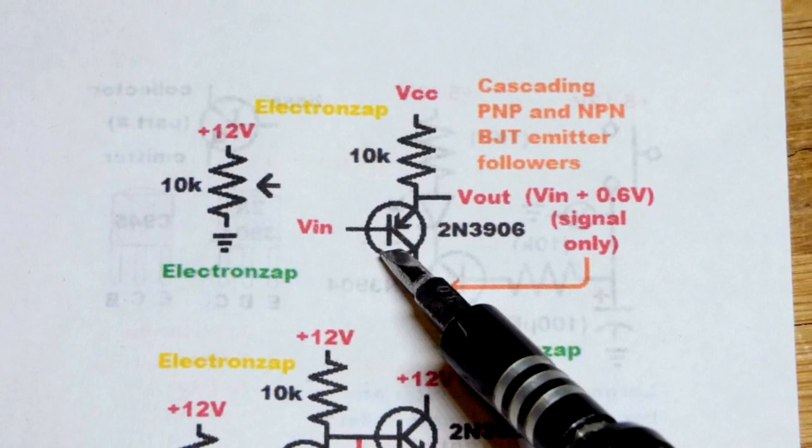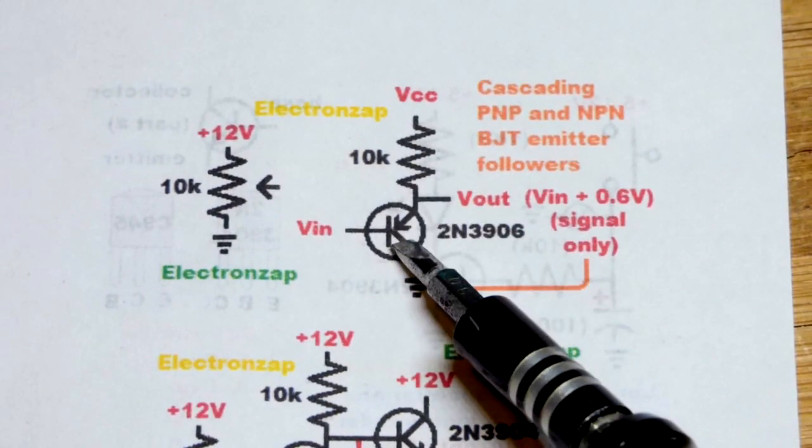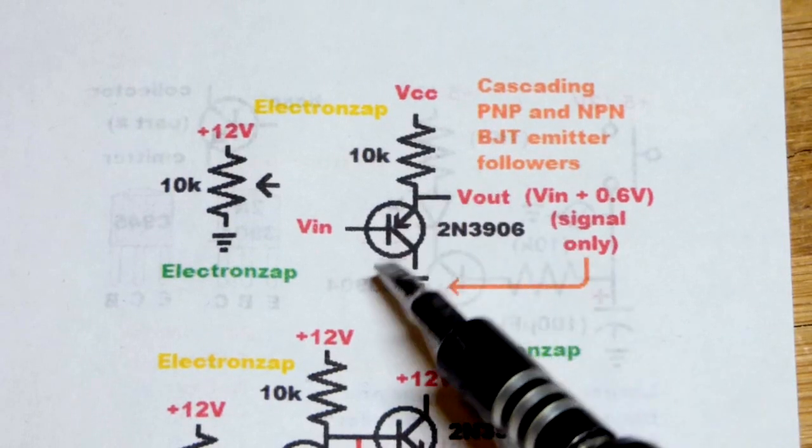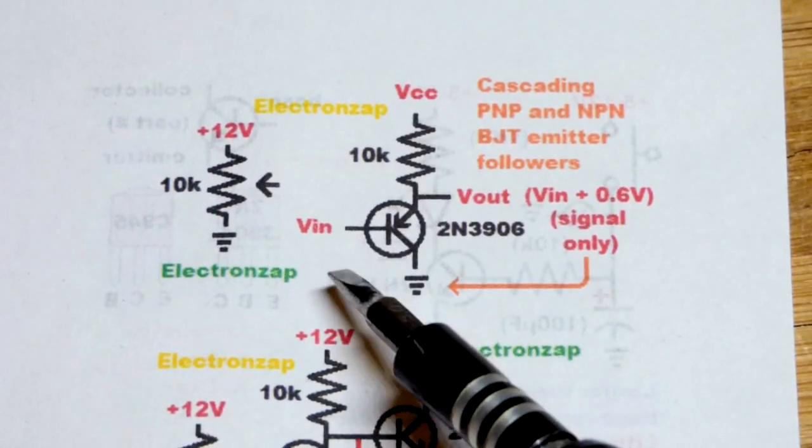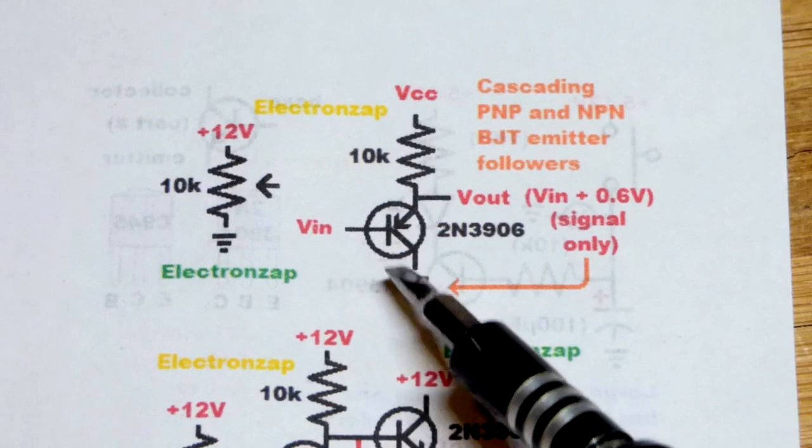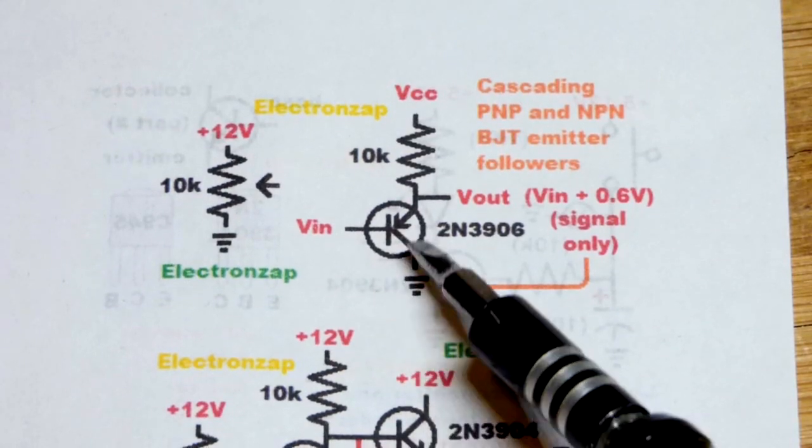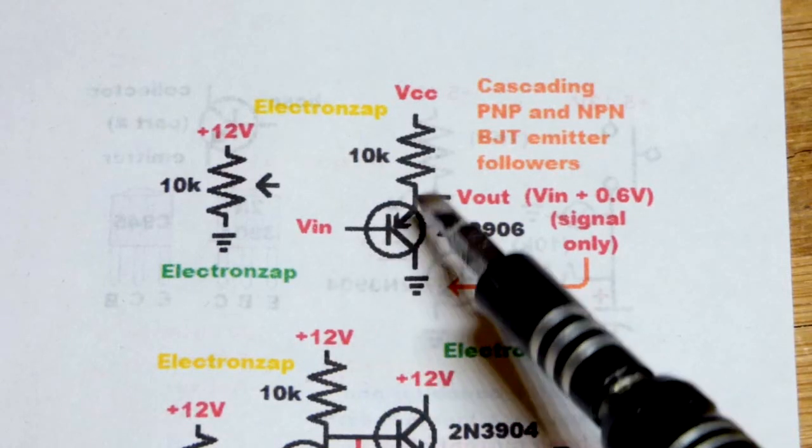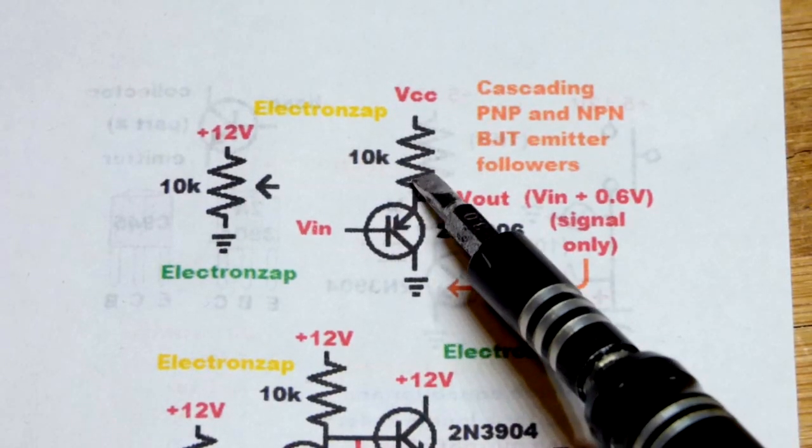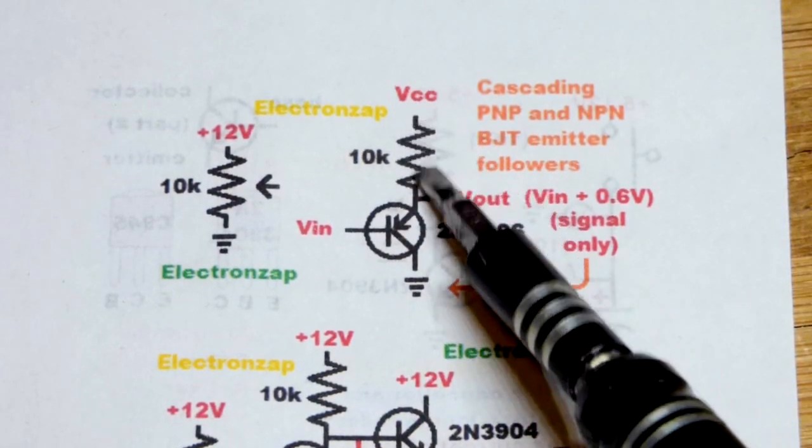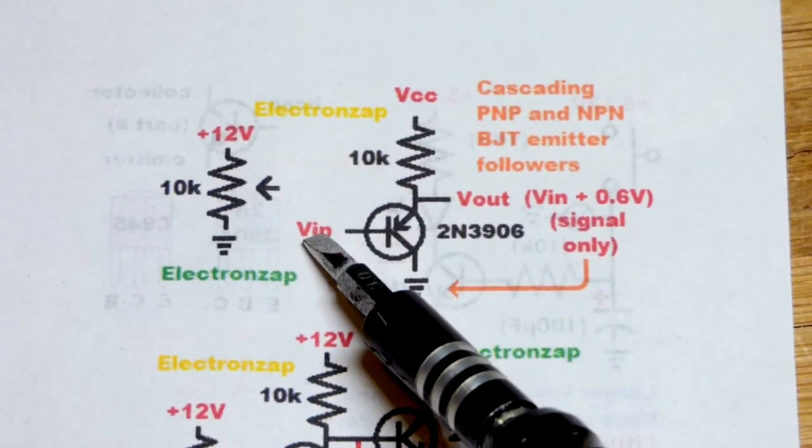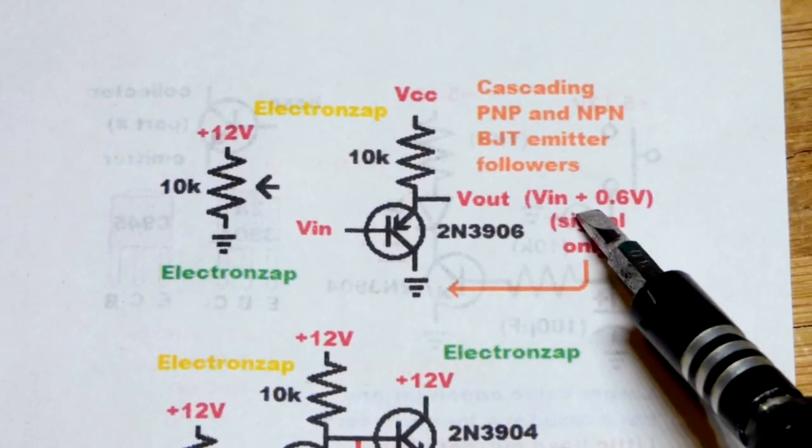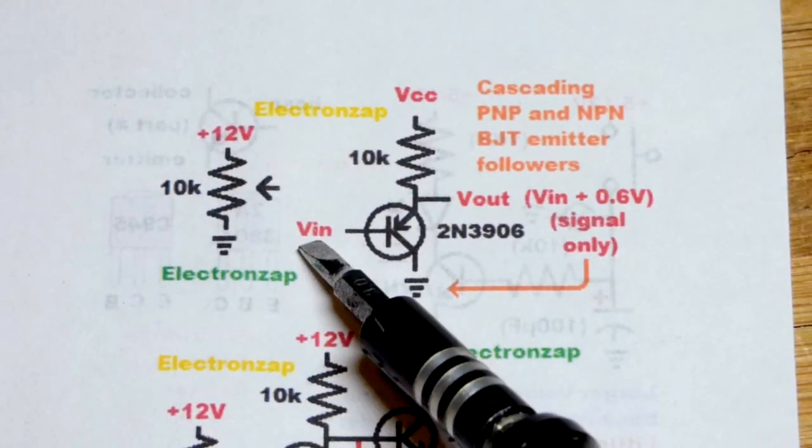At some point we took the PNP bipolar junction transistor. The emitter, if you're looking at the flat side, was still the left pin, the base was the middle, and the collector was the right pin. We turned it so the flat side was to the left, the emitter was on top, went to a 10,000 ohm resistor to the positive supply, collector to the negative supply ground. We did six volts and ended up with 6.6 volts coming out.